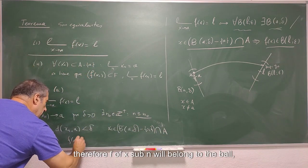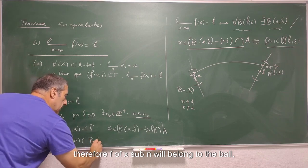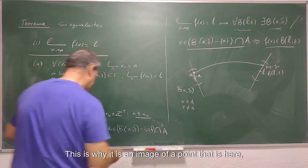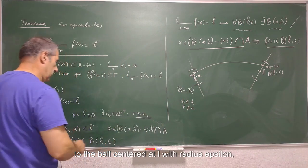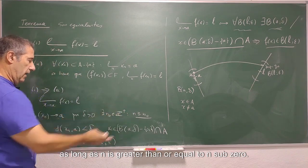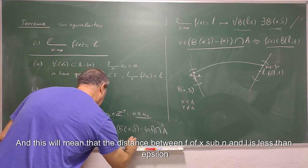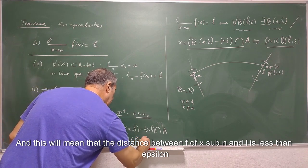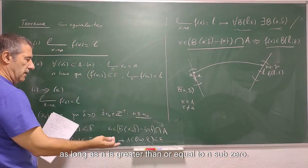Therefore f of x sub n will belong to the ball, this is why it is an image of a point that is here, to the ball centered at L with radius epsilon as long as n is greater than or equal to n sub 0, and this will mean that the distance between f of x sub n and L is less than epsilon.